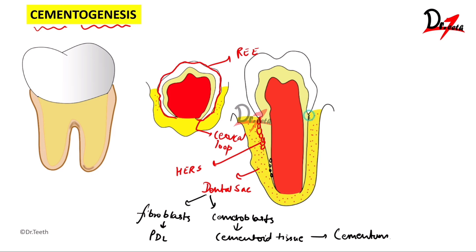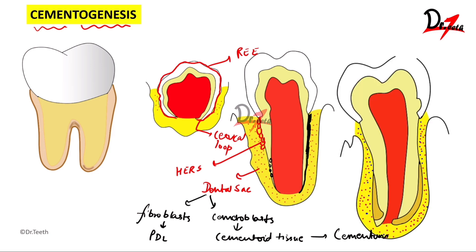Ultimately, a layer of cementum is formed onto the root dentine. During the process of calcification, some collagen fibers from the PDL embed into the cementoid tissue and get calcified — these fibers are called Sharpey's fibers. Sharpey's fibers are also called the extrinsic fiber group of the cementum, because they come from the PDL, or periodontal ligament, and are therefore extrinsic in nature. The cementoblast itself can also secrete certain fibers that are intrinsic to the cementum. So the cemental tissue consists of extrinsic fibers — Sharpey's fibers — and certain intrinsic fibers as well.